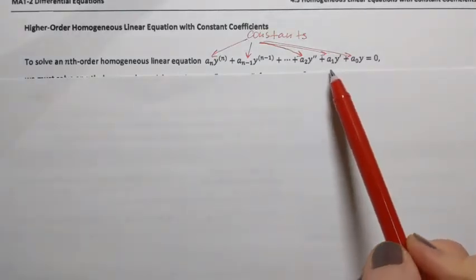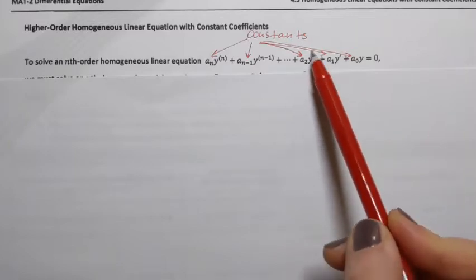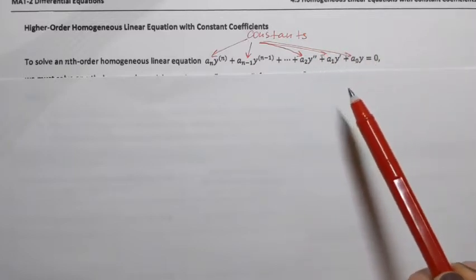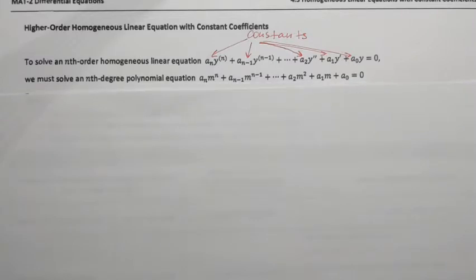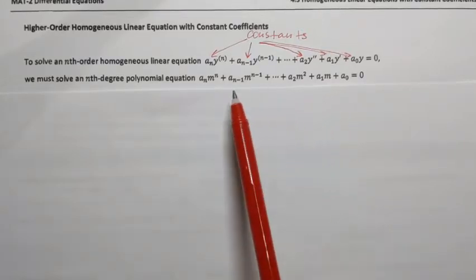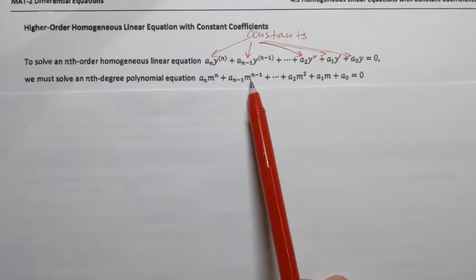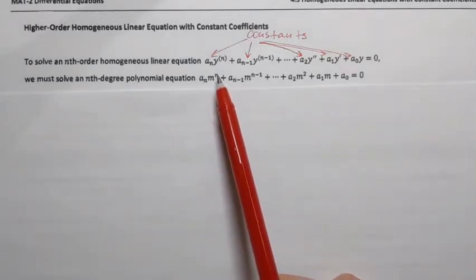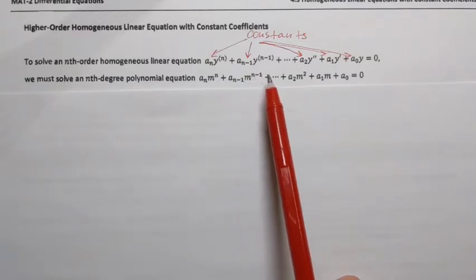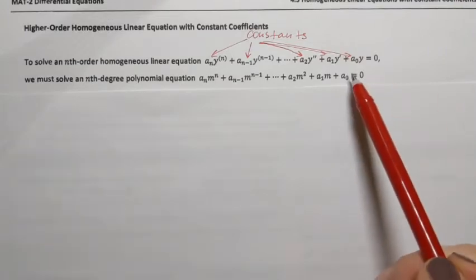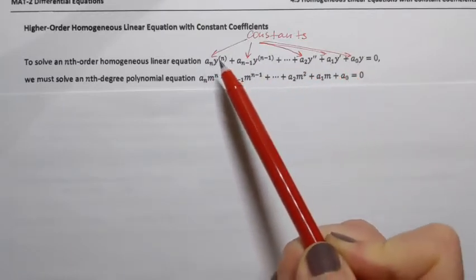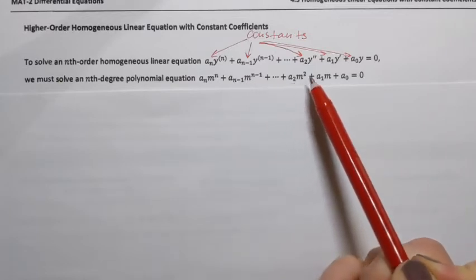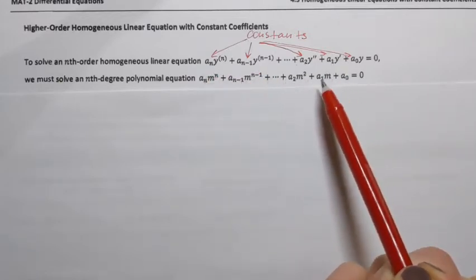We're going to learn how to solve second-order homogeneous linear equations with constant coefficients, and the approach we take for higher-order equations is similar. We obtain the corresponding nth degree polynomial equation, where the variable is m, raised to powers n, n minus 1, and so on down to power 0. The degree of this polynomial corresponds to the degree of the differential equation, and the same exact coefficients are used.